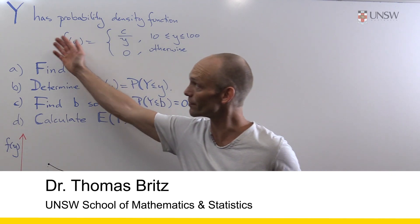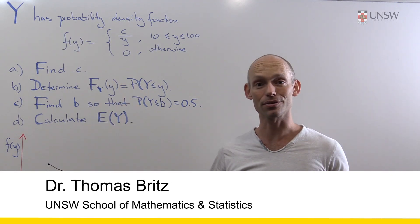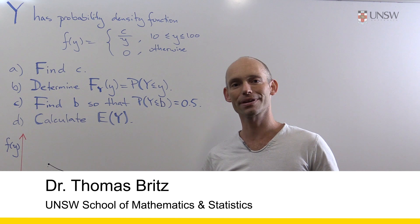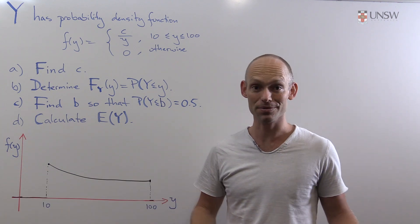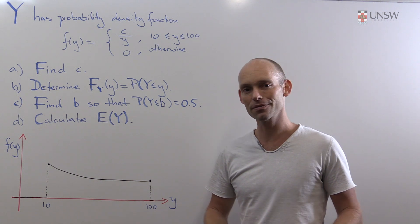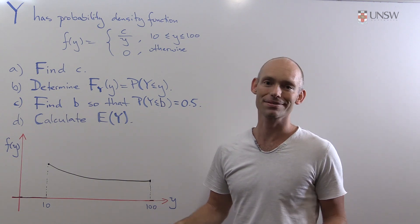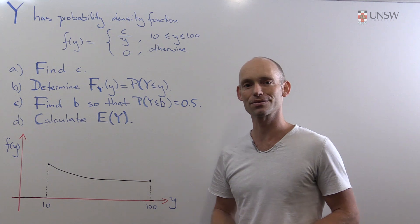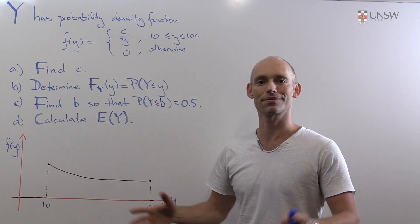In this problem, we have a random variable Y, and now it's a continuous random variable. So we've been looking at discrete random variables up to now, but now we're looking at continuous random variables. They behave in much the same way, but instead of adding probabilities together, we take the integrals of something.